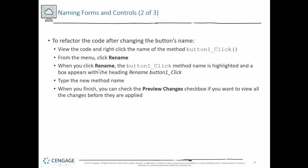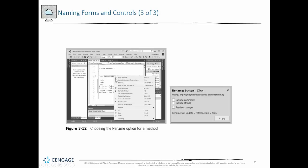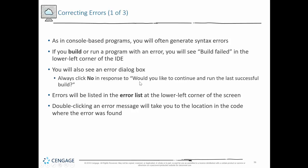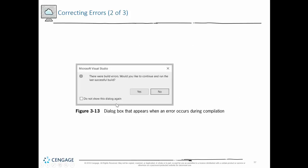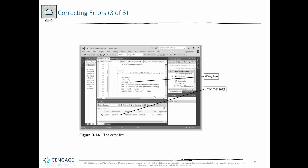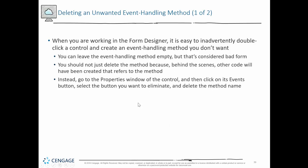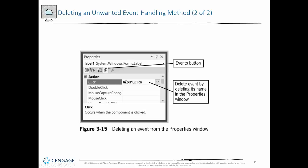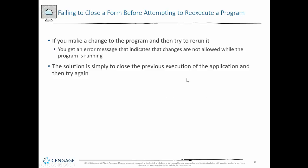We talked about changing the names of controls — but that should never really be a problem because you should always name things before you put any code in them. You can rename things afterwards; when you do, it will ask if you want to refactor — meaning if that name is used in code, do you want to change it everywhere? You'll want to say yes. As in console-based programs, you'll often generate syntax errors. Errors are shown in the error list. When asked if you want to continue with errors, say no and debug them. Also, if you accidentally double-click a control you don't want, they tell you how to remove it using the lightning bolt Events tab in the Properties window.